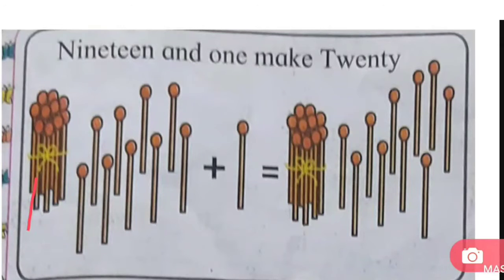And how many units are there? Let's count: 1, 2, 3, 4, 5, 6, 7, 8, 9. Nine units. 1 ten, 9 units equals 19. 1 ten, 9 units equals 19. Now we will add 1 matchstick to 19.